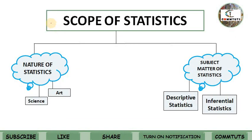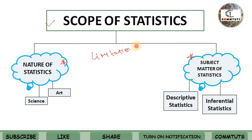Our main topic is the scope of statistics. In the scope of statistics, there are three topics. First is nature of statistics, second is subject matter of statistics, and third is limitations of statistics. In today's tutorial we will discuss the nature of statistics.